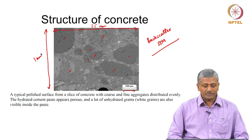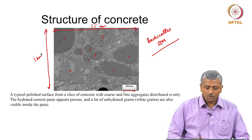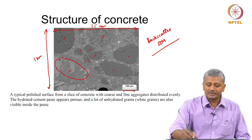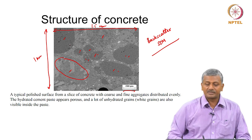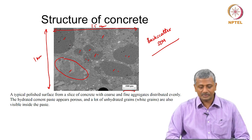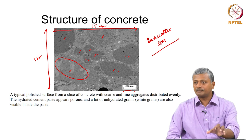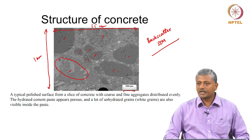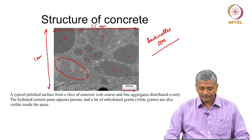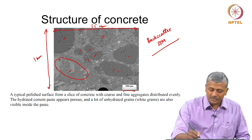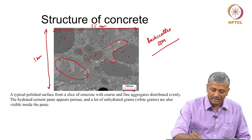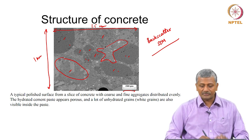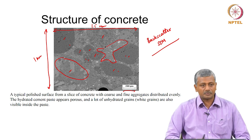A typical polished surface from a slice of concrete shows coarse and fine aggregates. Some particles could be pieces of coarse aggregate, while those with an almost uniform colour are pieces of fine aggregate. The coarse aggregate can have chunks small enough to be viewed here, but typically the size of coarse aggregate is quite large. You also see the paste region inside the aggregates, which is composed of several different levels of grey.